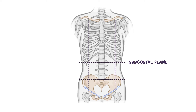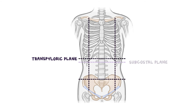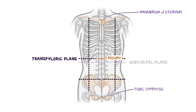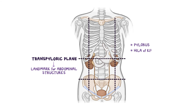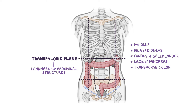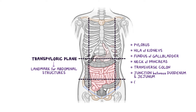It's important to note that sometimes the trans-pyloric plane is used to define the superior boundary of the nine regions instead of the subcostal plane. The trans-pyloric plane passes through the L1 vertebrae, midway between the superior manubrium of the sternum and the pubic symphysis, and is slightly higher than the subcostal plane found at L3. The trans-pyloric plane is a landmark for many abdominal structures, such as the lower portion of the stomach (the pylorus), the hyla of the kidneys, the fundus of the gallbladder, the neck of the pancreas, the transverse colon, the junction between the duodenum and the jejunum, as well as the superior mesenteric artery and the hepatic portal vein.